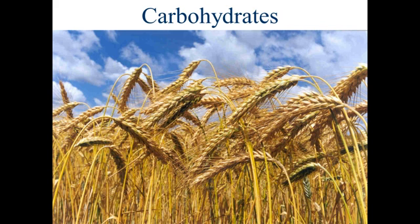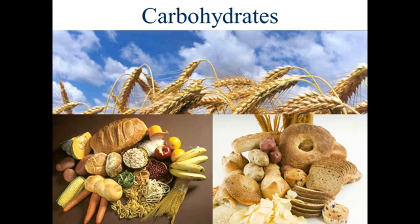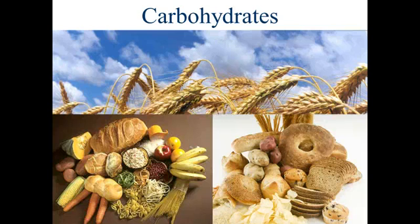We're going to start off talking about carbohydrates with this amber waves of grain picture, which is of course where all the carbohydrates that we consume begin — as some form of grain. Whether we consume monosaccharides, which are sugars, or disaccharides like our table sugar, or polysaccharides, which are starches, they all start off this way. When we think of carbohydrates, usually these are the types of foods we think about: breads, pastas, sweets, and also lots of fruits and vegetables, which contain lots of carbohydrates as well.